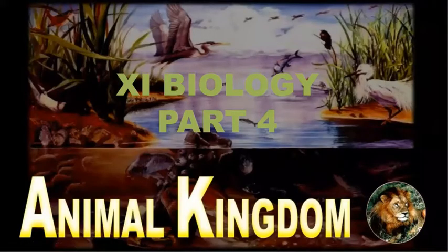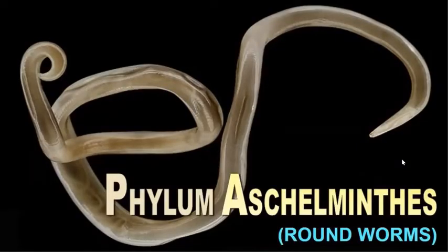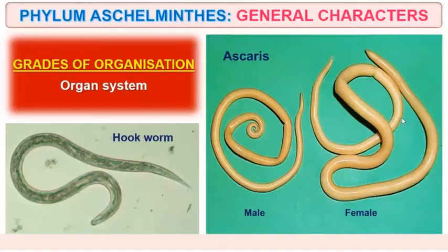Welcome students to another session of Animal Kingdom Part 4. Here we will discuss Aschelminthes, which are also known as roundworms.